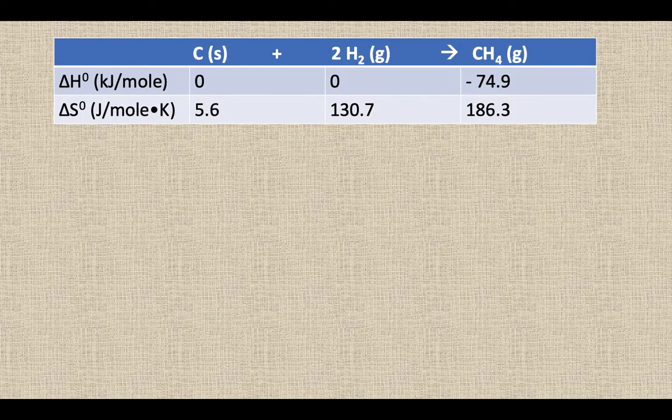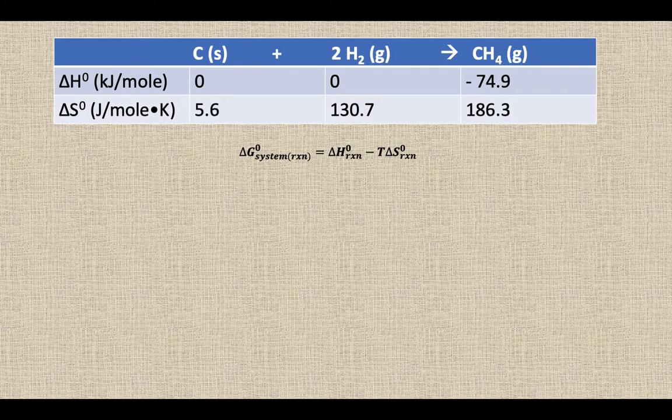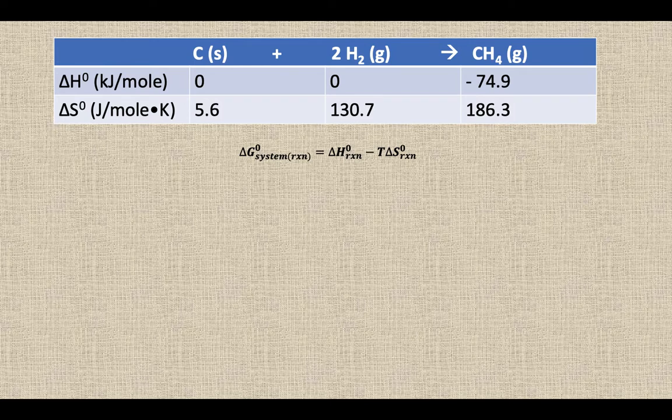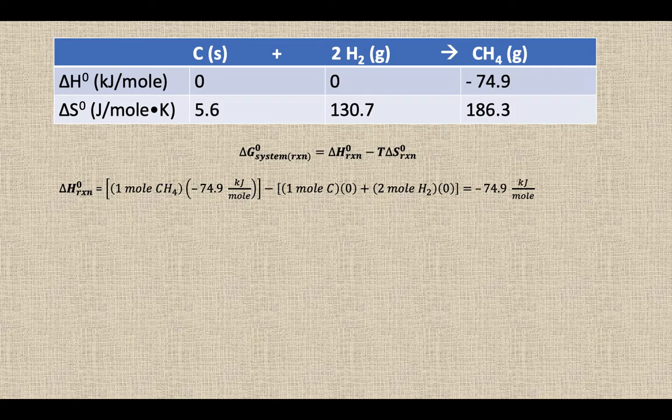So if we take those numbers and think about that Gibbs free energy equation, which was delta H minus T delta S, we need to find all the pieces of that puzzle. The delta H of reaction, we do products minus reactants, and we get a value of negative 74.9 kilojoules per mole of reaction.